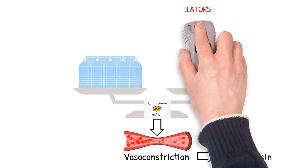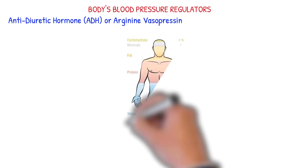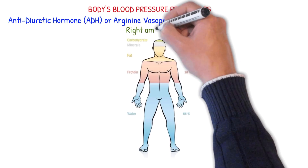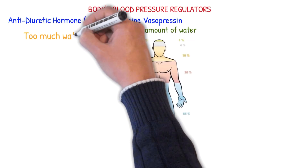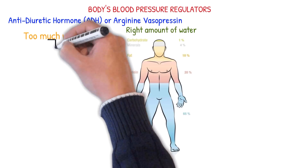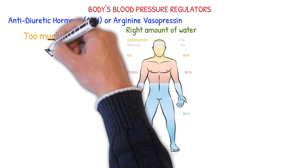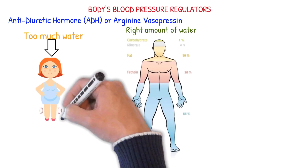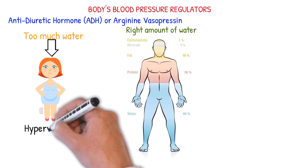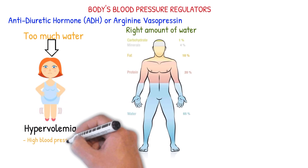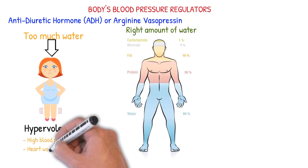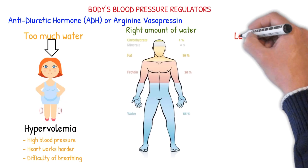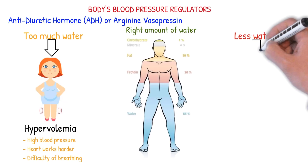Our body needs just the right amount of water. If we have too much water in the body, we'll be fluid overloaded, or hypervolemic. The extra fluid in the body can raise your blood pressure and force your heart to work harder. It can also make it hard for you to breathe.